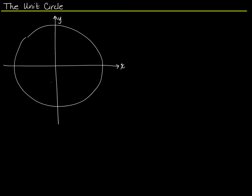We've already done some things with something that might be considered akin to the unit circle. I drew a circle and I said, note that this is 45 degrees, or pi over 4. I meant that this angle here has its initial side on the positive x-axis, and its terminal side is 45 degrees, or pi over 4 radians, away.